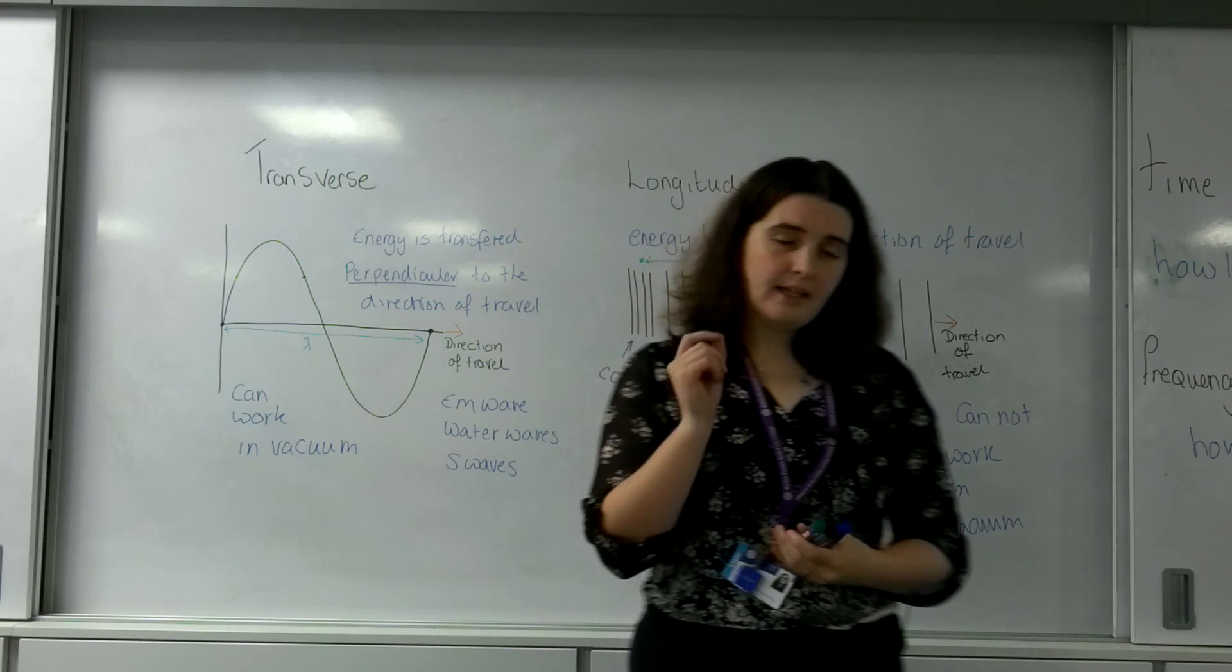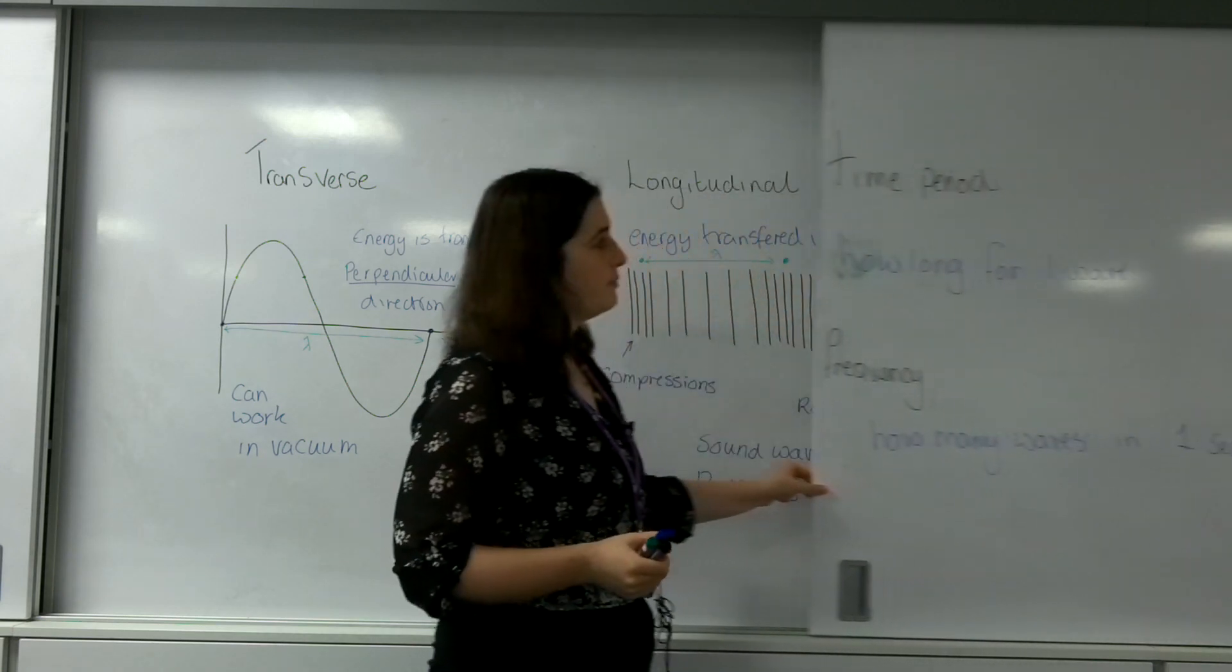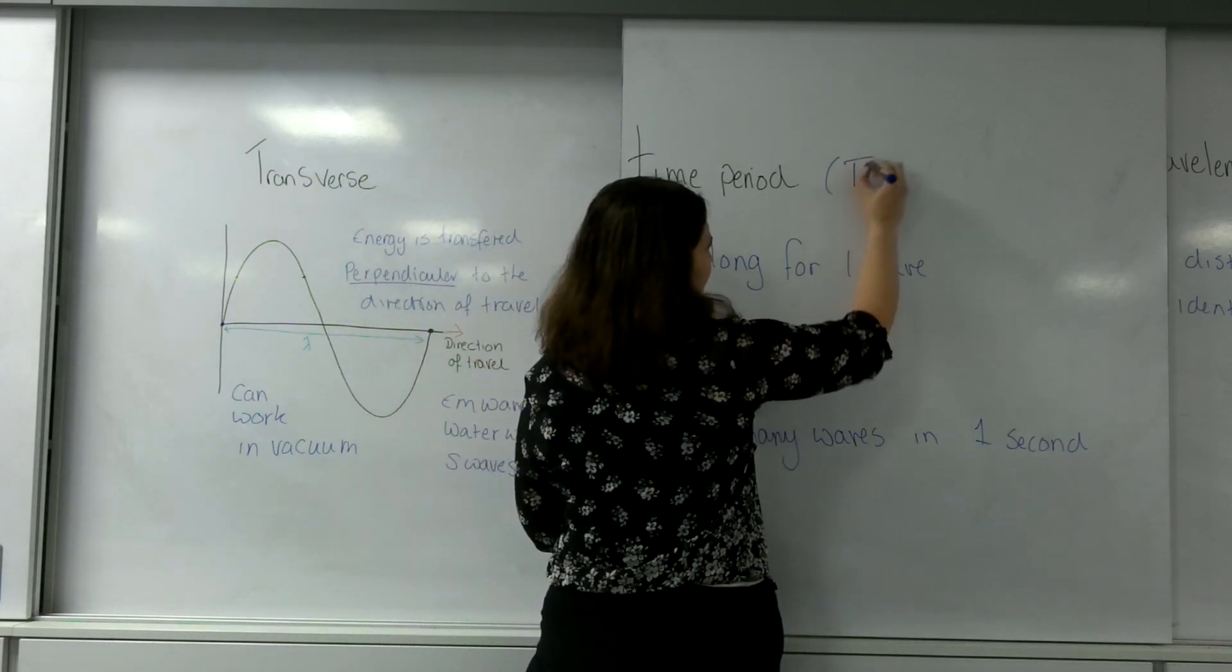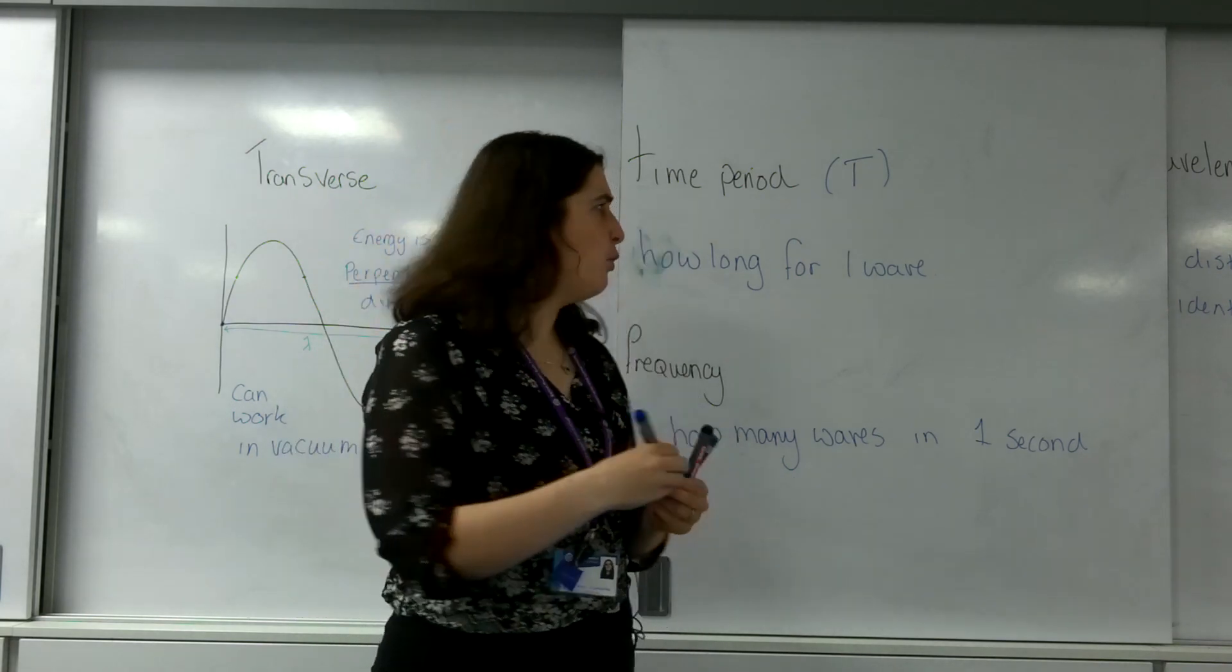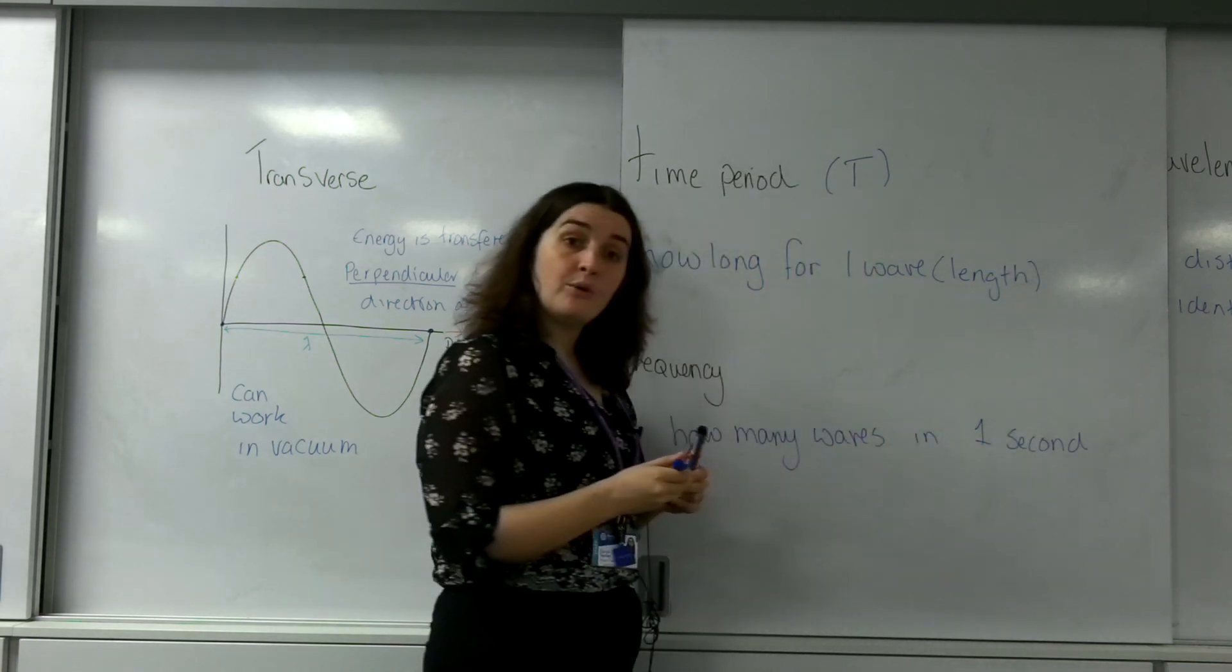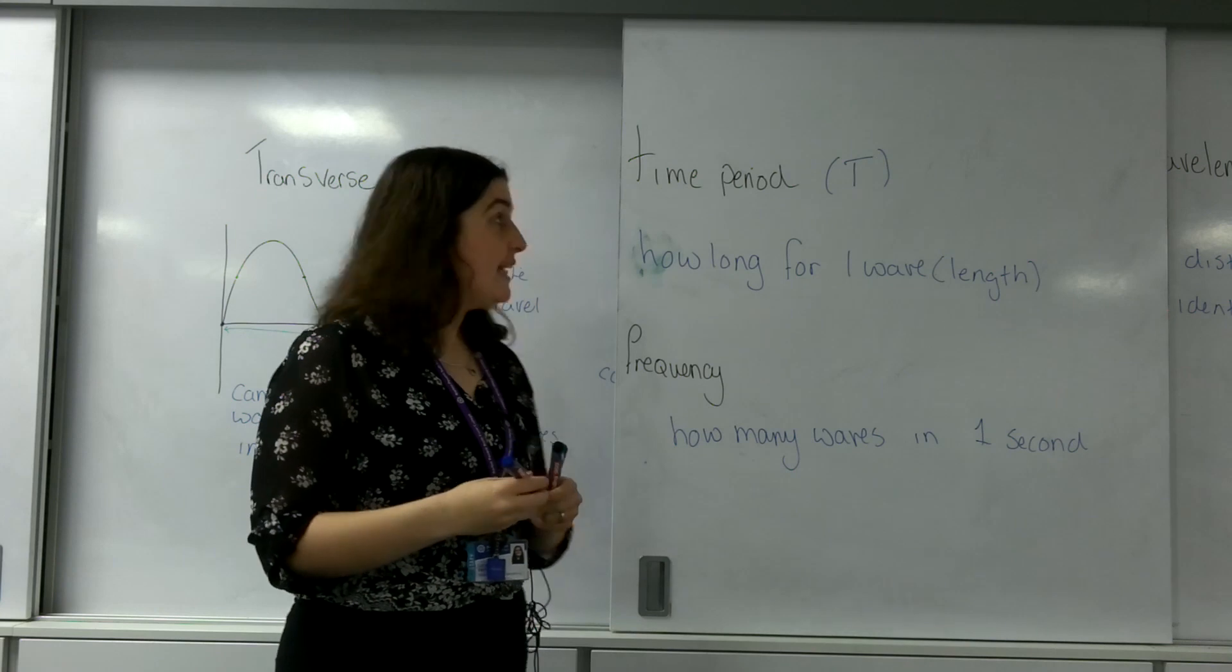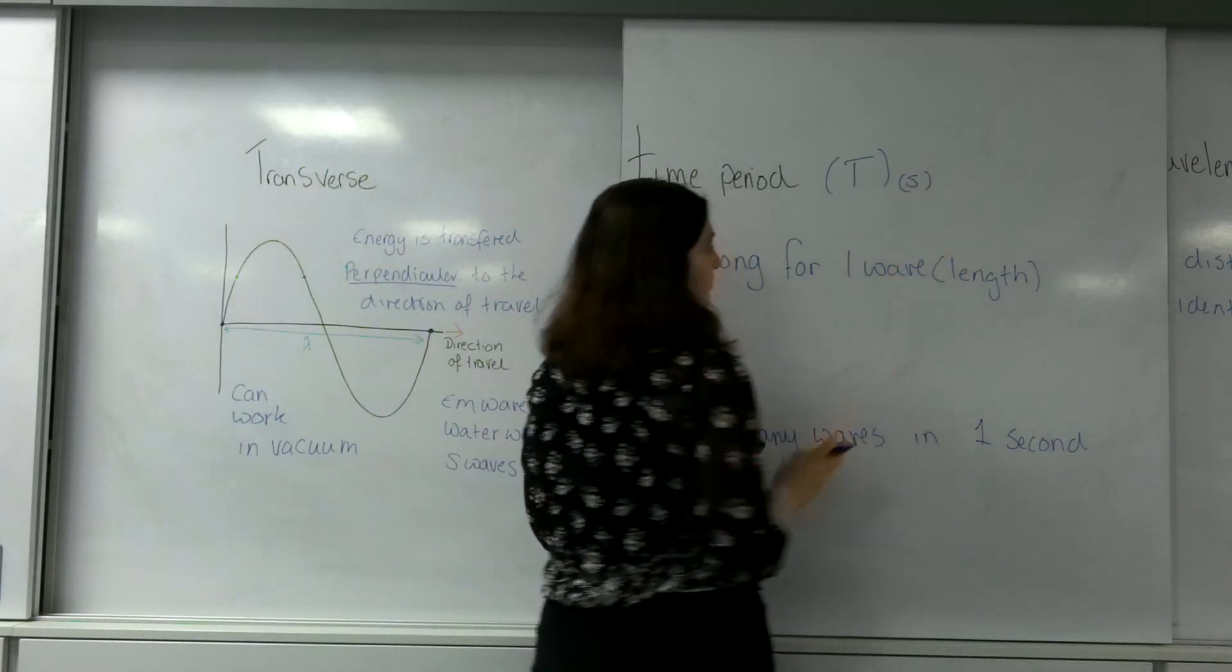Another key defining feature of a wave is its time period. The time period for a wave, or the letter big T, is defined as how long it takes for one whole wave or wavelength to travel through a point. How long does it take this to travel? That is the time period. It is measured in seconds or S.